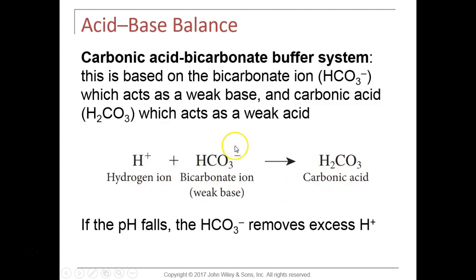Our lungs and kidneys are the two organ systems that regulate pH at the organ level. The lungs regulate pH by manipulating how much CO2 is exhaled. In the carbonic acid cycle — a reversible reaction — at internal respiration, CO2 combines with water in the presence of carbonic anhydrase to form carbonic acid. Carbonic acid dissolves into hydrogen ions and bicarbonate ions.